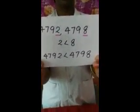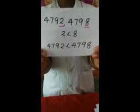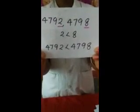Another example. See here: four thousand seven hundred and ninety-two and four thousand seven hundred and ninety-eight. In this example, the thousands place, hundreds place, and tens place digits are all the same, but the ones place digits are two and eight. Two is always lesser than eight. So the answer is four thousand seven hundred and ninety-two is lesser than four thousand seven hundred and ninety-eight.